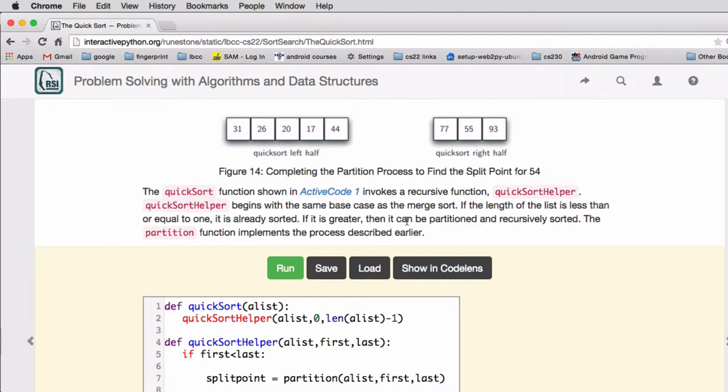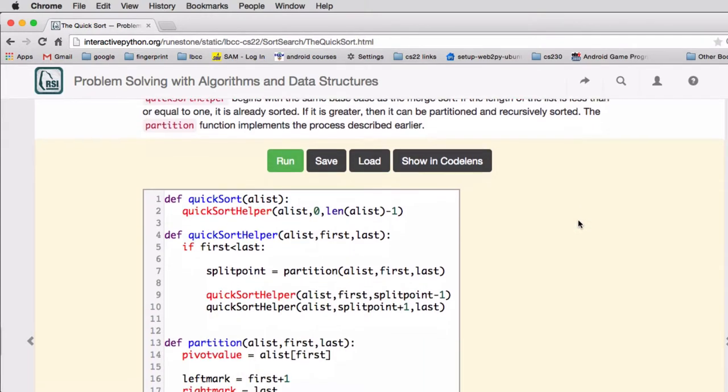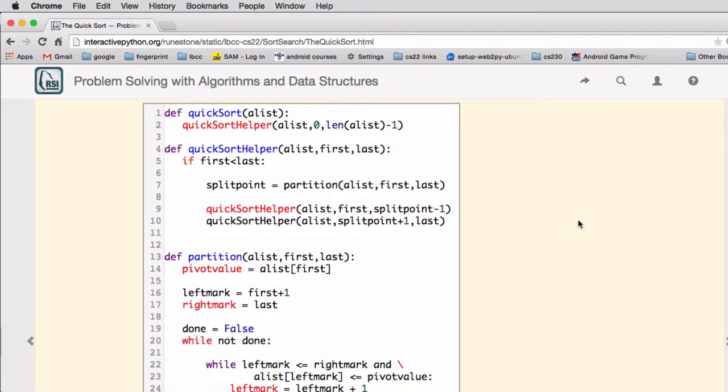If it's greater, then it can be partitioned and recursively sorted. So this is, we haven't done this in recursion, but many times in recursion you have a main method that then calls a helper method to actually do the recursion.